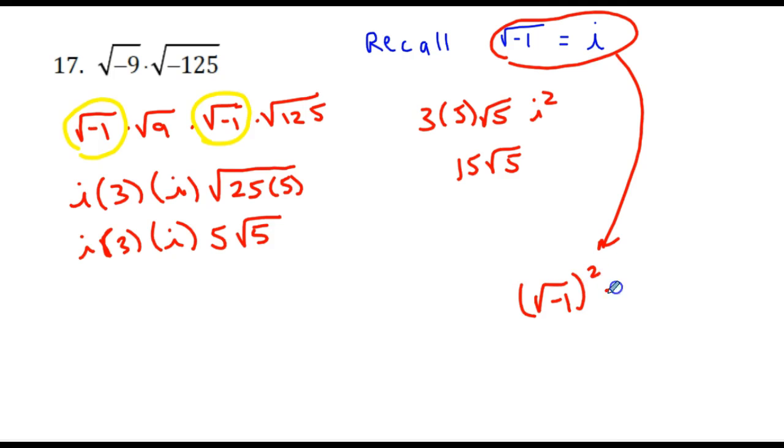that would be the same as i squared. So i squared is the same as just negative 1. This becomes 15 times the square root of 5 times negative 1, or negative 15 times the square root of 5.